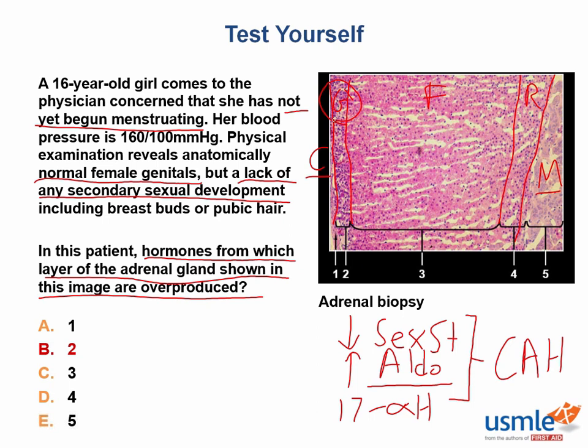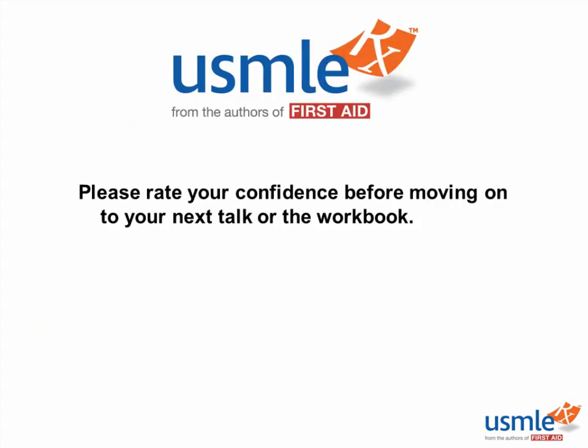And for those wondering: yes, the adrenal gland mostly produces weak androgens. But even though a woman's secondary sex characteristics generally arise as a result of estrogens, estrogens are created from the aromatization of androgens. So no androgen production means no estrogen production.